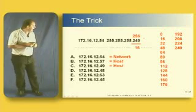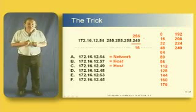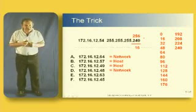.49 is, again, a valid host on subnet 48. It's the next available IP address after the network address. .48 is the network address itself.